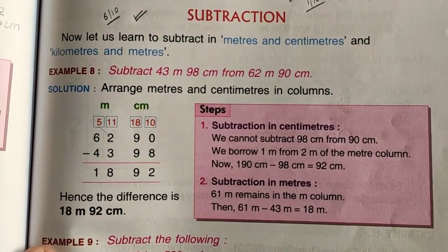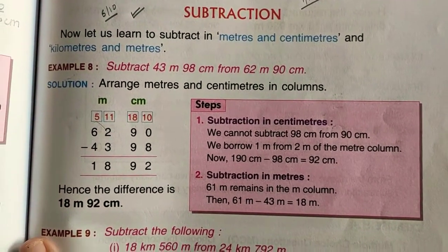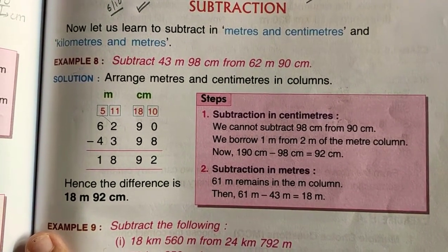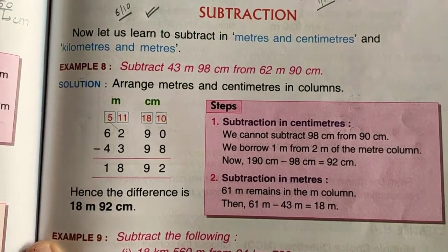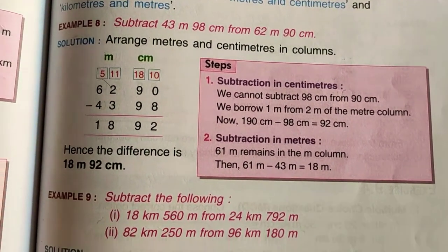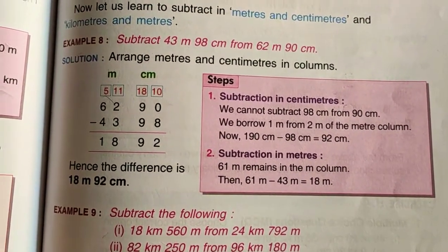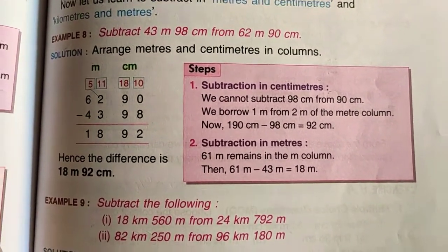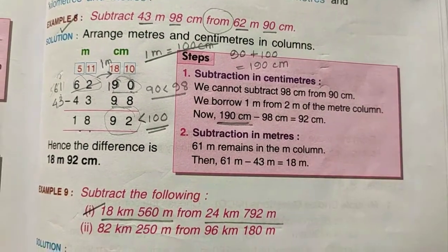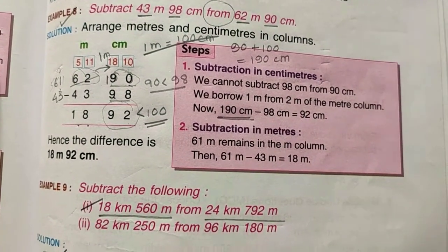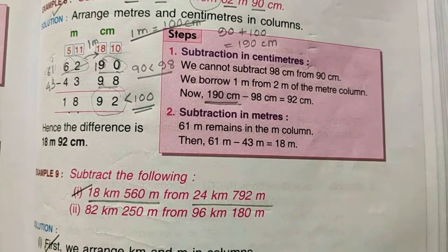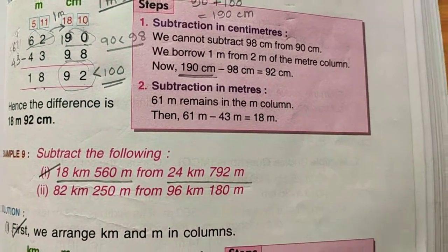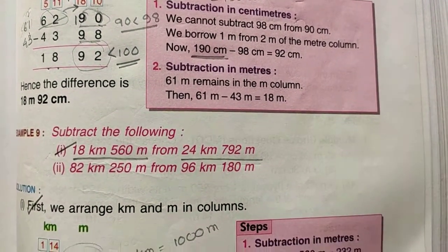If there are lengths with two units like meter centimeter or kilometer meter, then how do we subtract them? There are two types of subtraction here. First is normal subtraction which we normally do. And the second one is the subtraction using borrowing, where we borrow from the previous number.